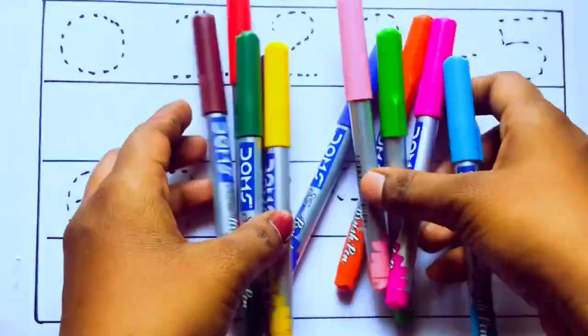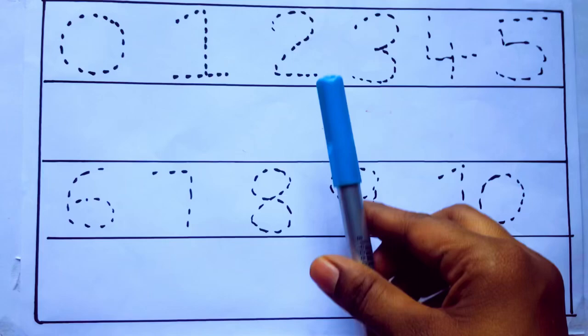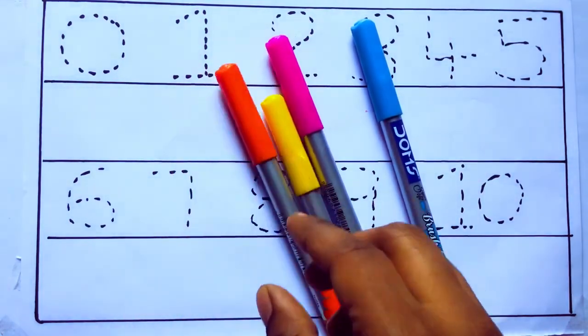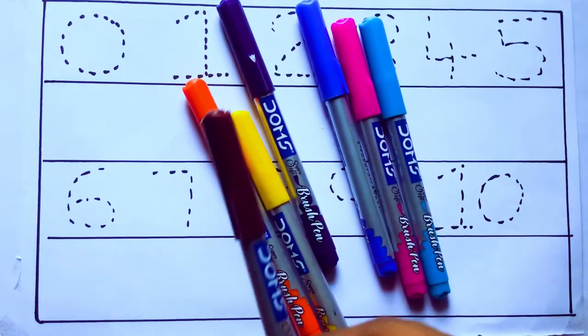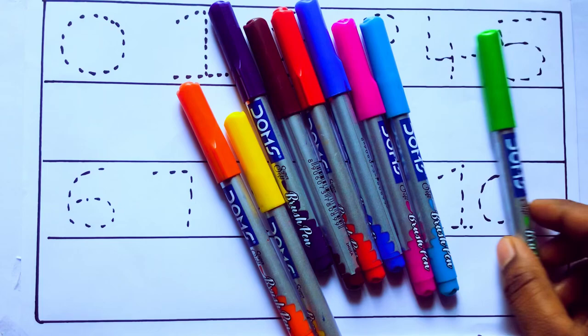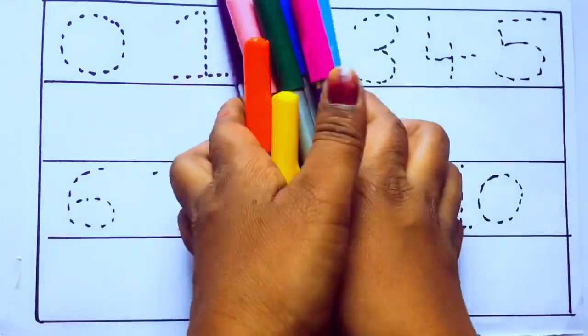Let's learn some colors. These are all the color pencils. Let's learn the names. Sky blue color, pink color, yellow color, orange color, violet color, blue color, brown color, red color, green color, green color, and pink color.